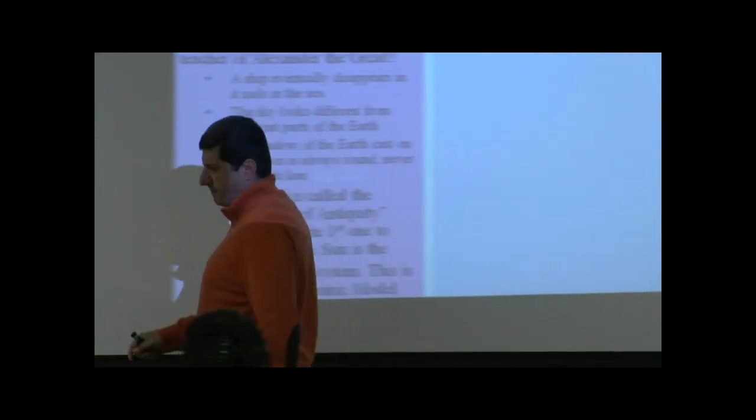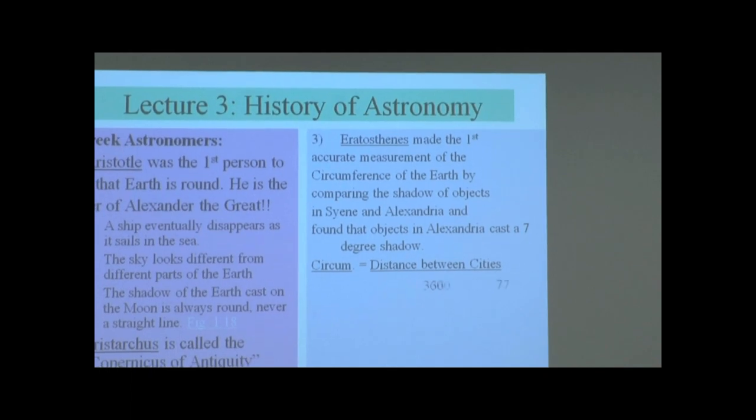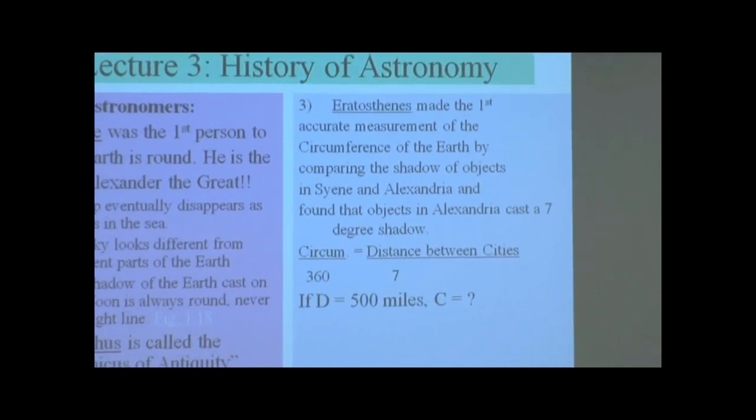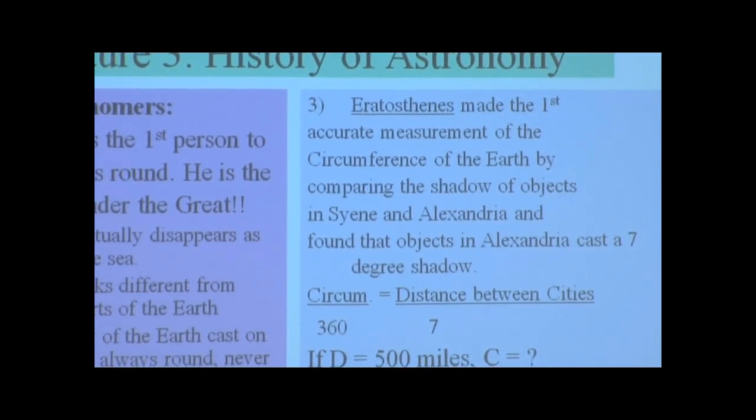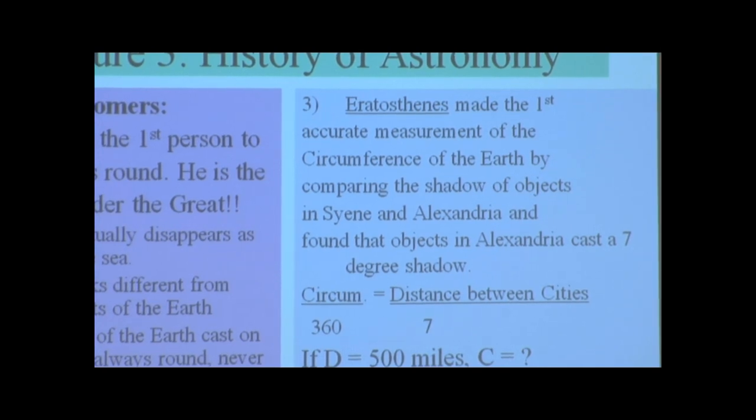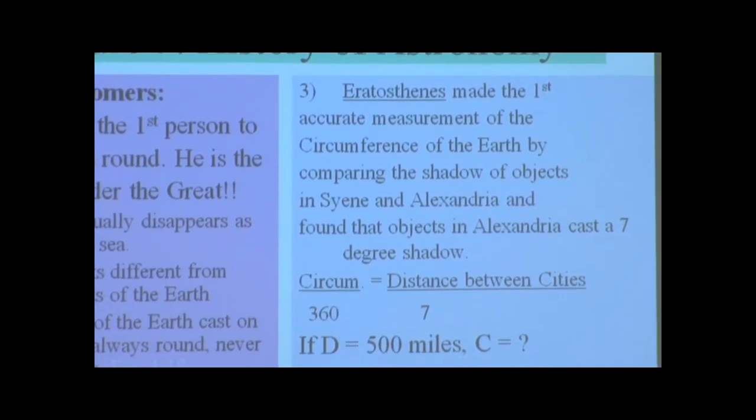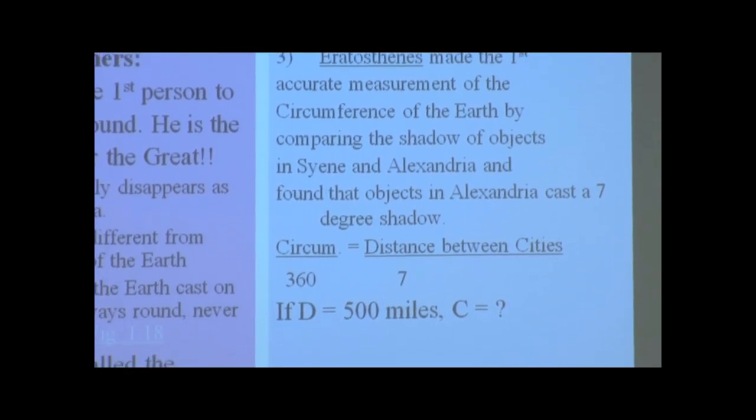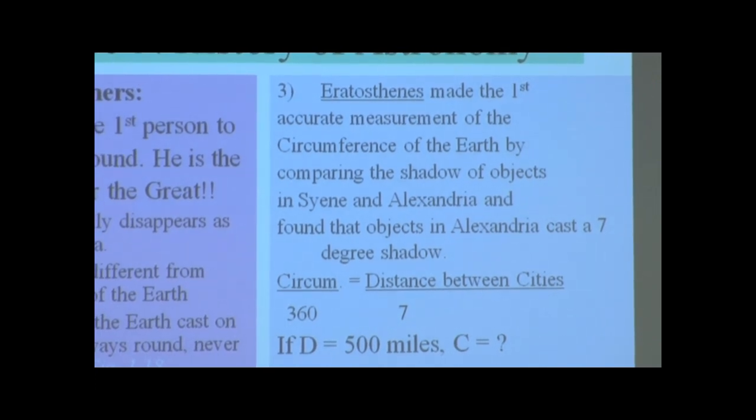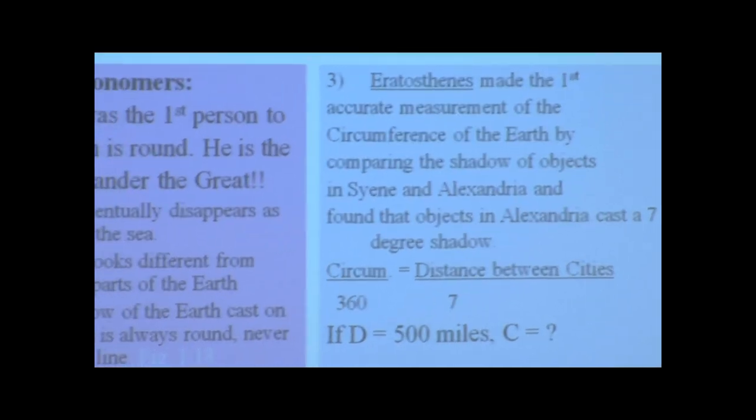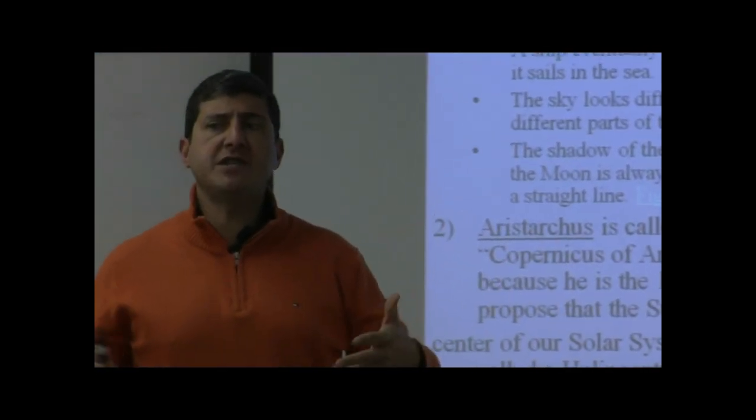Now let's go to the next person. So to me, Eratosthenes is also pretty interesting, his discovery. Not so much discovery, but his cleverness. He was the first one to accurately give a measurement of the circumference of the earth by comparing the shadow of objects in Cyrene and Alexandria and found that objects in Alexandria cast a seven-degree shadow.